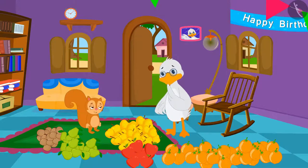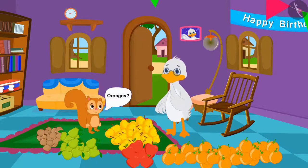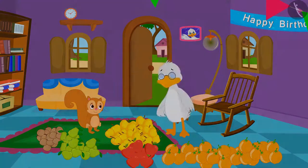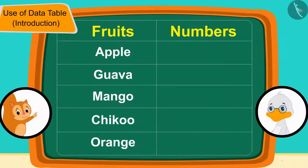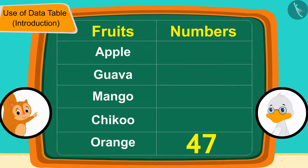Uncle, do you remember the number of oranges, Chanda asked uncle. Uncle immediately said, 47. Chanda wrote this number in front of the orange in the table like this.